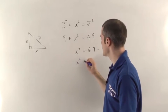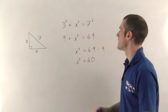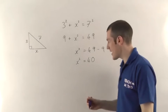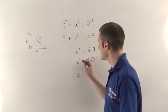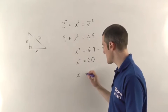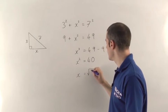Now 49 minus 9 just gives you 40. So again, to work out the length of the x, you just have to square root both sides. So if you square root x squared, you just get back to x. And if we square root 40, again on the calculator, we're going to get 6.3.